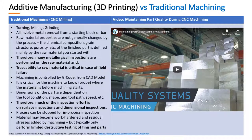Let's start with traditional machining. These processes involve metal removal from some starting material, typically in block or bar form, and the raw material properties aren't changed by the process. The end piece still has the same chemical composition, grain structure, porosity, and so on as the raw material you started with. So we count on metallurgical inspections at the beginning of the process on the raw material, with a fair reliance that the metallurgical properties haven't changed as a result of the machining.